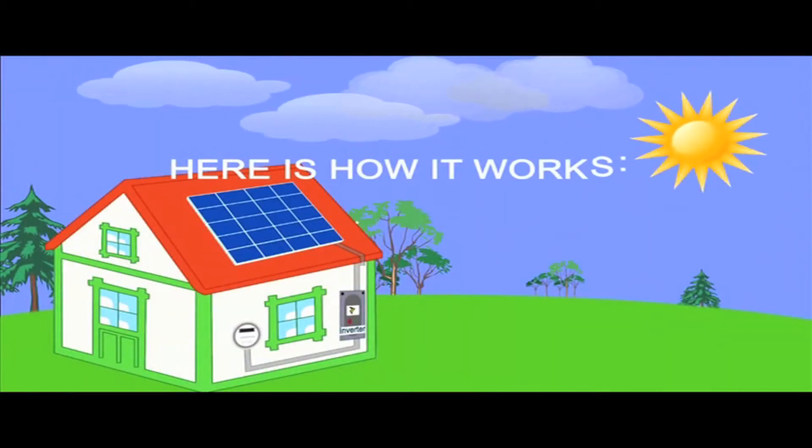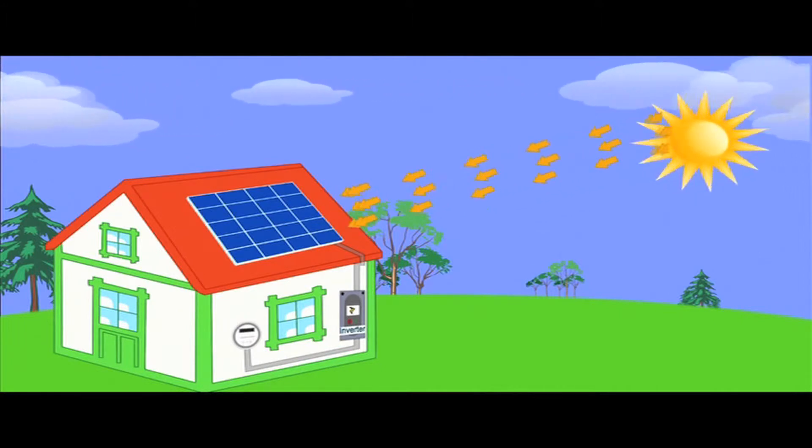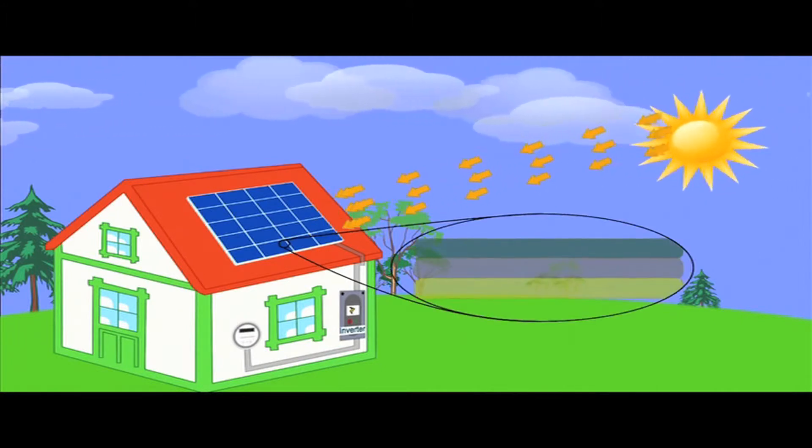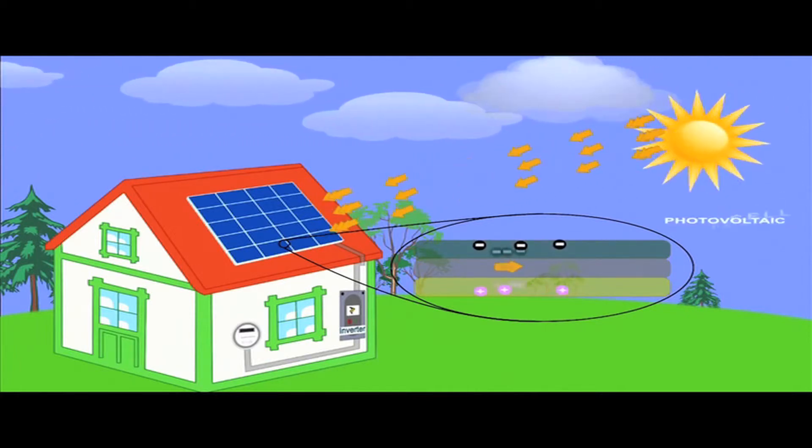Here's how it works. Every day, sunlight will stream down onto your solar panels with photons, which are particles of sunlight. Then, the solar panels convert those photons into electrons of electricity using photovoltaic cell technology.